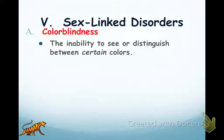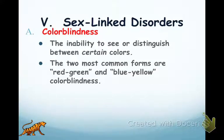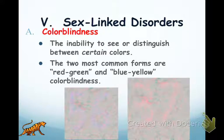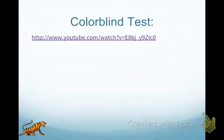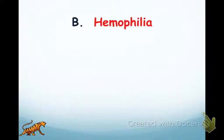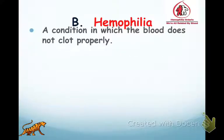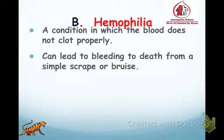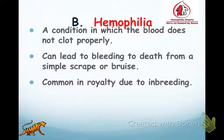Sex-linked disorders are things carried on the sex chromosomes. Colorblindness is one example — can you see the difference between those two pictures? Can you see the number inside? There are color blind tests you can try. Hemophilia is a blood clotting disorder where your blood does not clot properly. Back in the day, hemophilia was a life-threatening disease because a simple scrape or bruise could lead to death from not stopping bleeding.